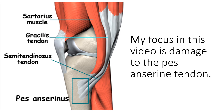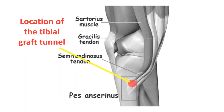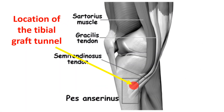So this is the pezanserine tendon. It's made of three different muscles and attaches on the inside of your knee below the joint. This is the location of the tibial graft tunnel — that's where the surgeon drilled a tunnel in order to put the ACL graft. The problem is he also went right through this important tendon.